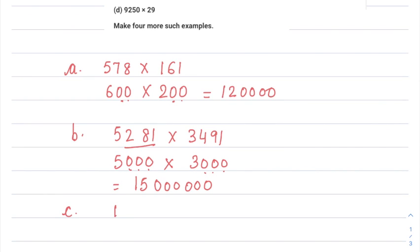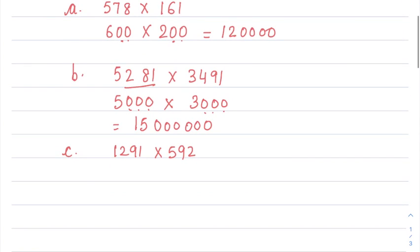Part (c): 1291 multiplied by 592. For 1291, it is between 1000 and 2000. The middle is 1500, and since 1291 is smaller than 1500, it is closer to 1000, so we round it to 1000. For 592, it is between 500 and 600, and since it is closer to 600, we round it to 600.